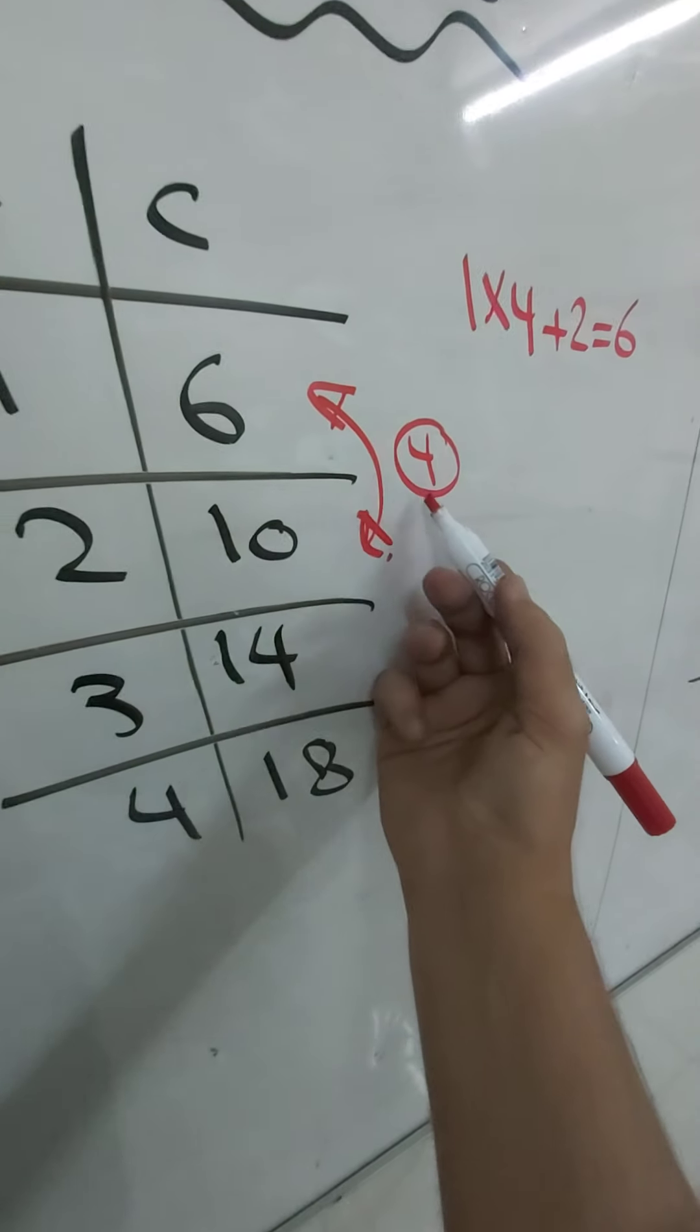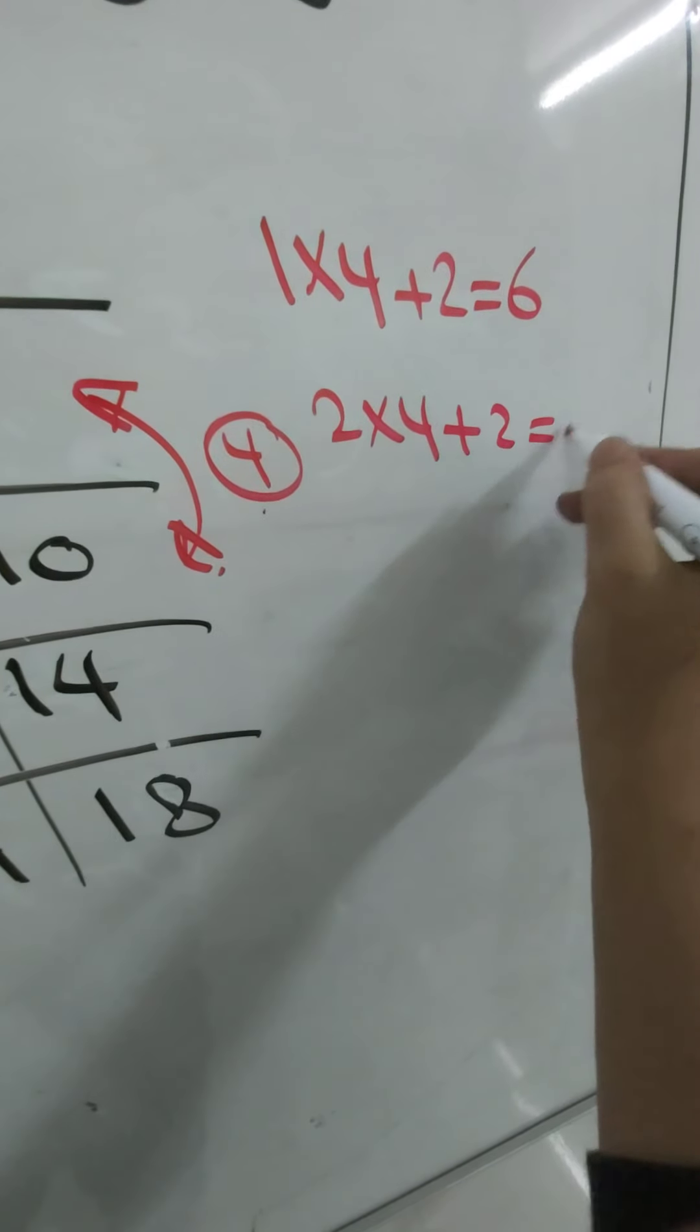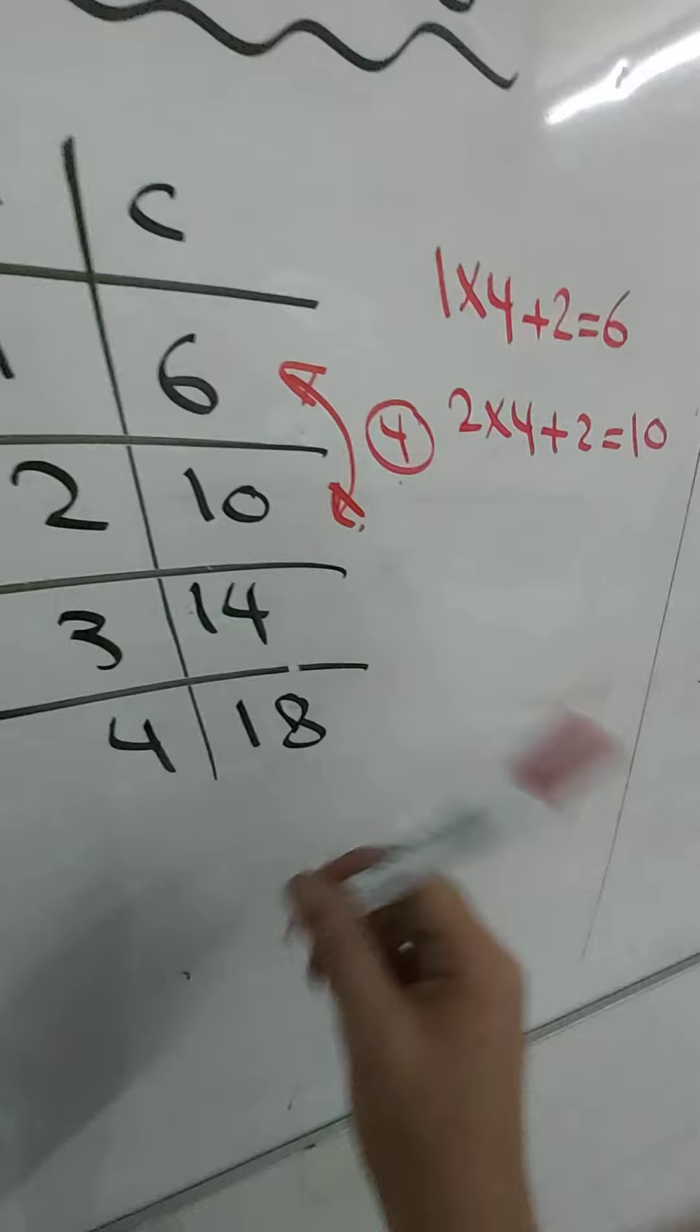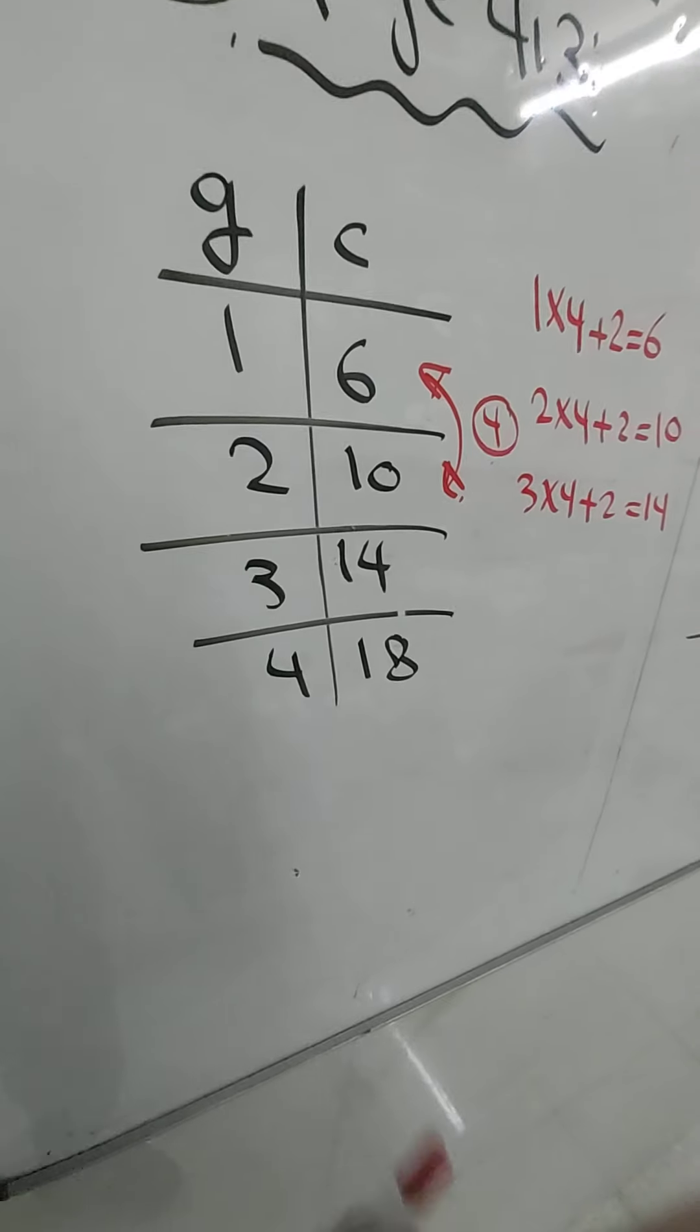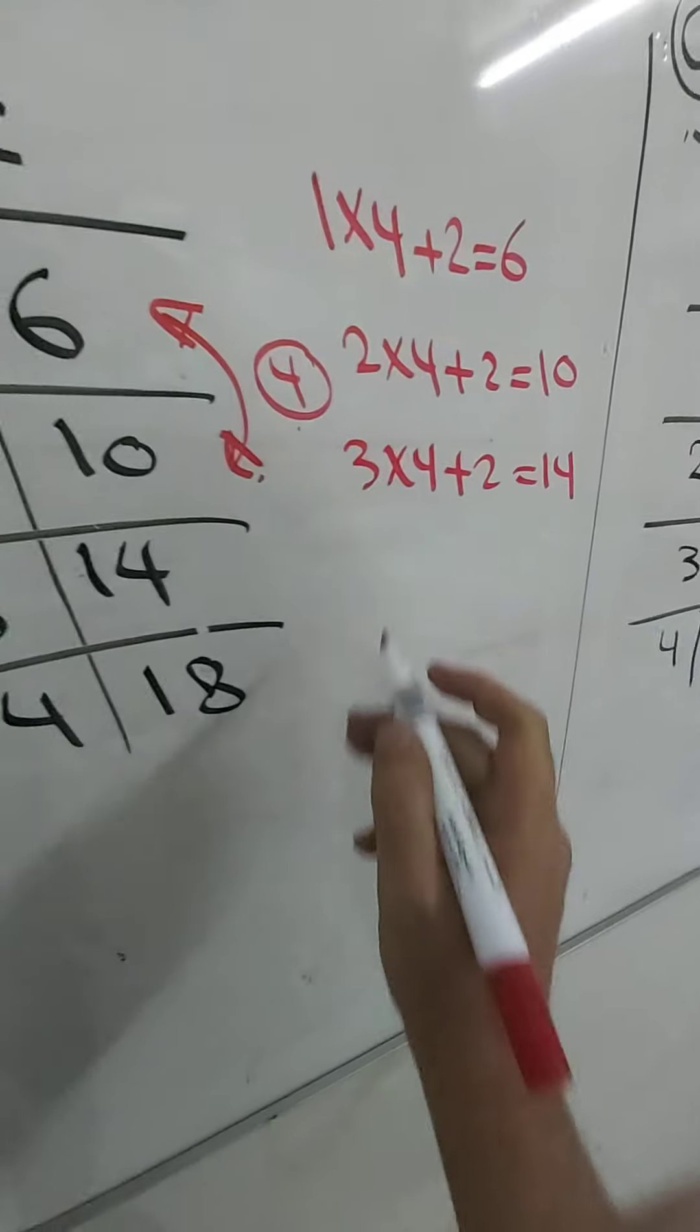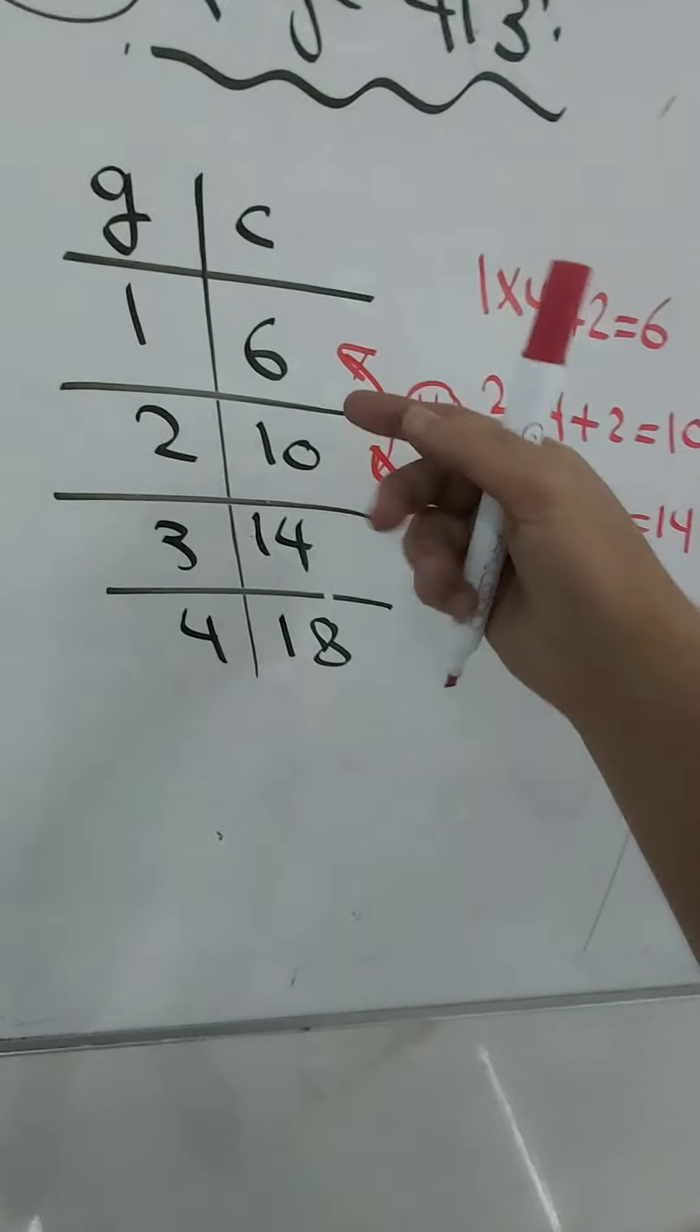Now let's do the same for the two. Two multiply four is eight, plus two is ten. Do it for the three: three multiply four is twelve, plus two is fourteen. Do it for four: four multiply four is sixteen, plus two is eighteen.